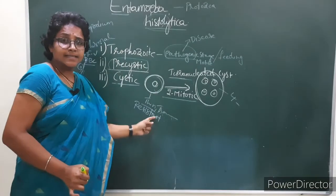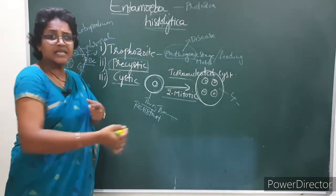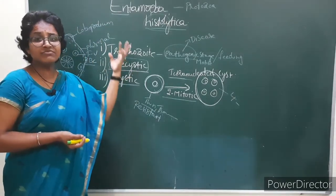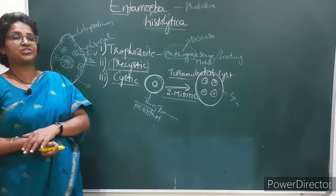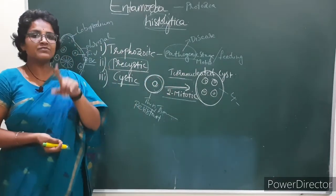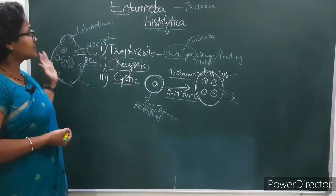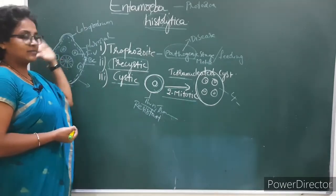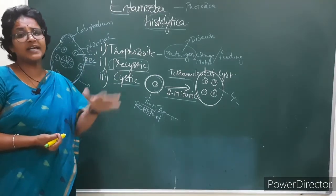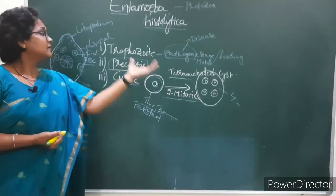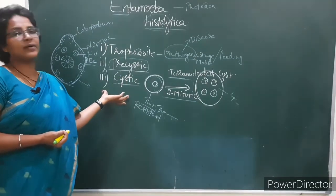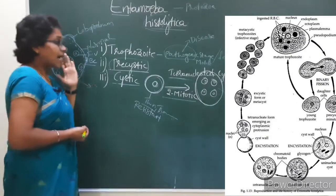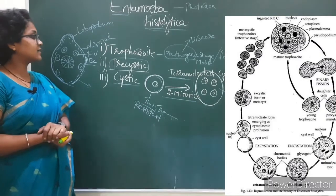The tetranucleated cyst enters into the human being — it is the infective stage to man and causes infection. This is about the introduction to Entamoeba histolytica. Before entering into the life cycle, we had a look at this introduction; otherwise, we cannot understand the life cycle. I hope you all understood, my dear students. Thank you.